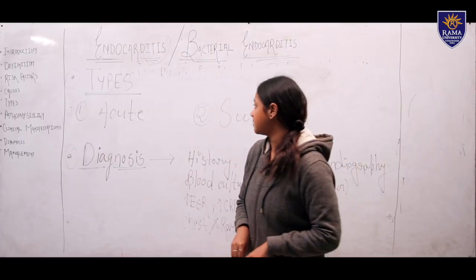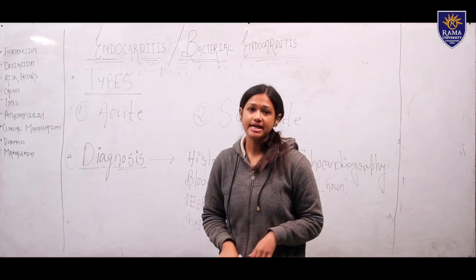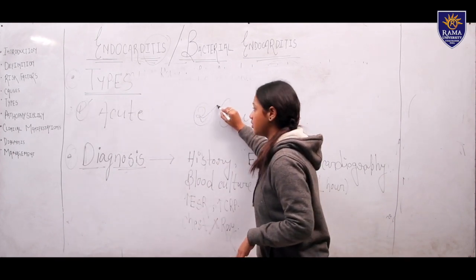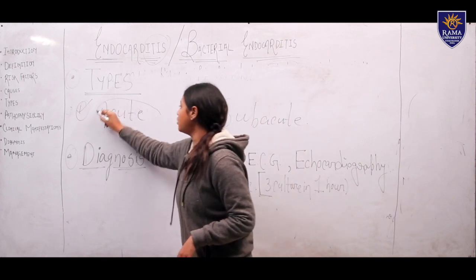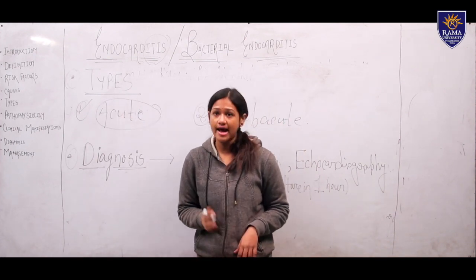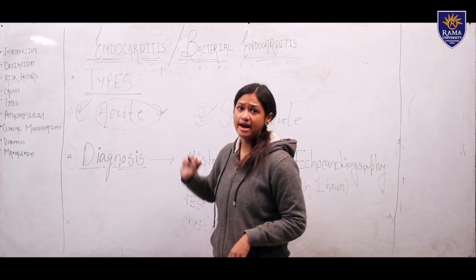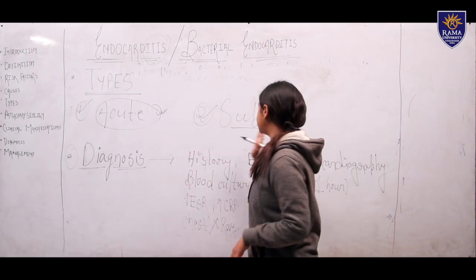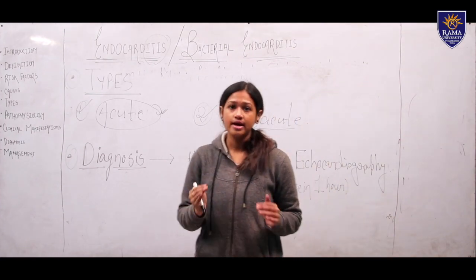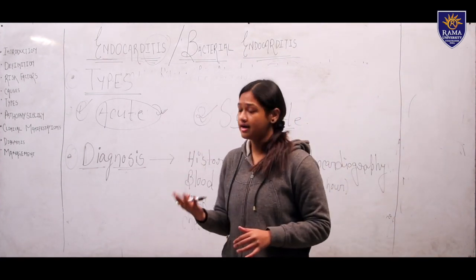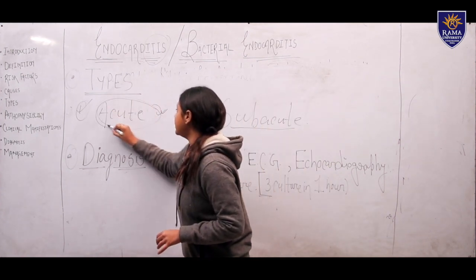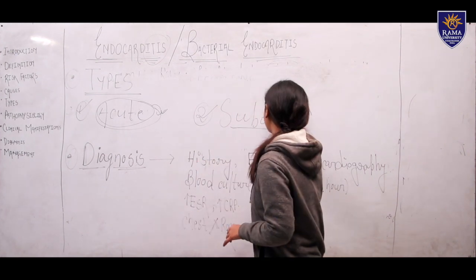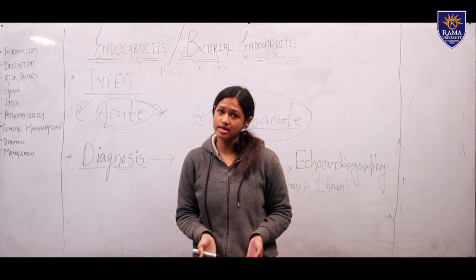Endocarditis is mainly classified into two types: acute endocarditis and sub-acute endocarditis. In acute endocarditis, the manifestations are more prominent and severe, and it can lead to death. Sub-acute endocarditis is less severe — normal signs are shown and it can often be treated by antibiotics only. Acute endocarditis is mainly caused by Staphylococcus bacteria, while sub-acute is mainly caused by Streptococcus bacteria.